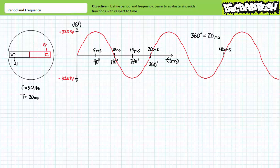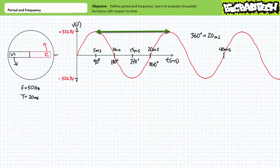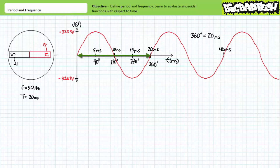Graphically, period can be calculated as the time between identical points on the sine wave. Given the repetitive nature of sine waves, one can use the time span between zero crossings going positive, between zero crossings going negative, between positive peaks, between negative peaks, or any other identifiable point. However, the zero crossing going positive is the recommended reference — it is immediately recognizable and unmistakable. In summary, to graphically measure the period, use the zero crossings going positive.